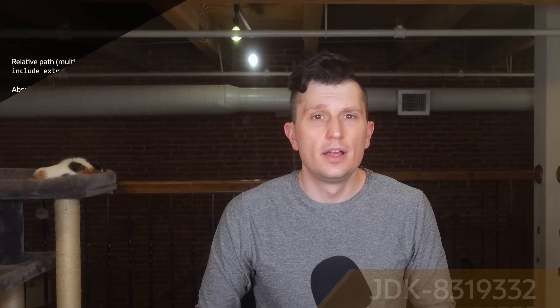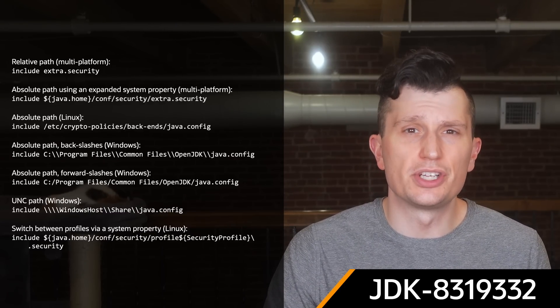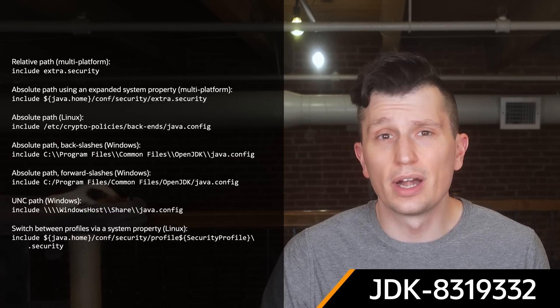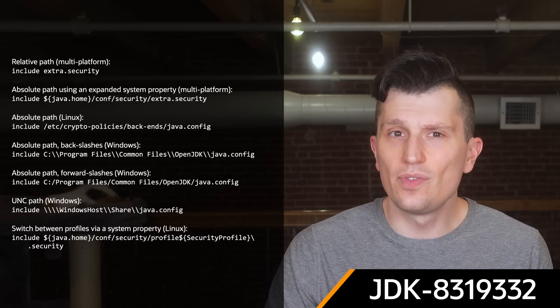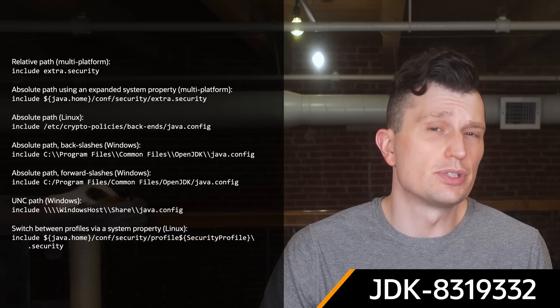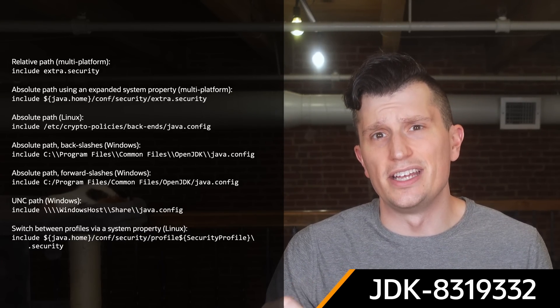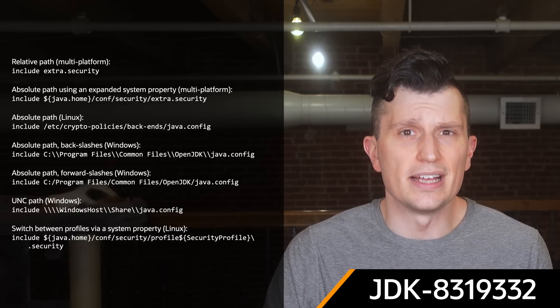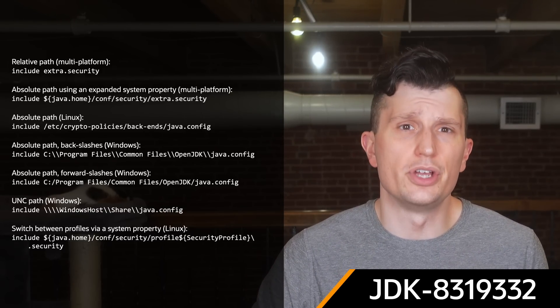There are several new security features added in the JDK 24 release. The Java Security Properties file has added the ability to include files using the include keyword and the path to the file. Included files are added inline at the inclusion point, and include can no longer be used as a property name. The goal of this change is to make it easier to manage multiple JDKs. Check JDK-8319333 for a guide on usage.